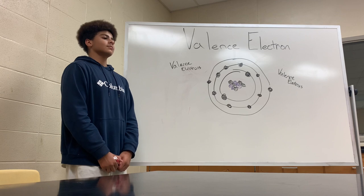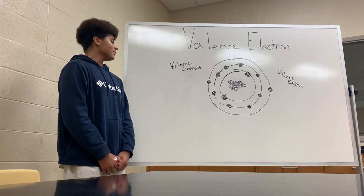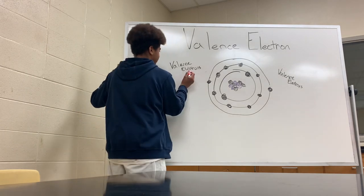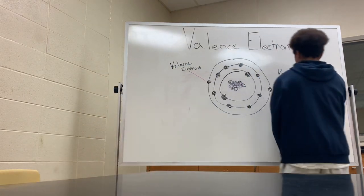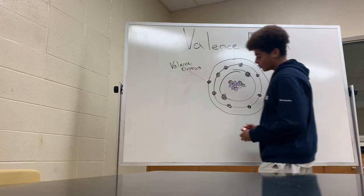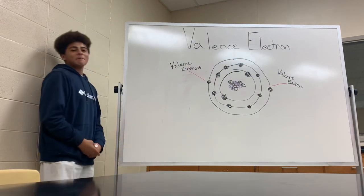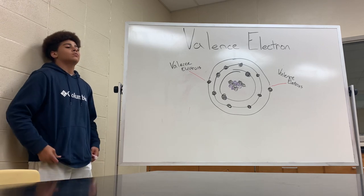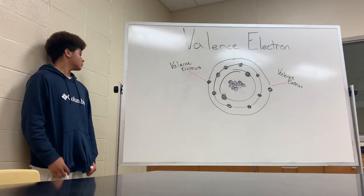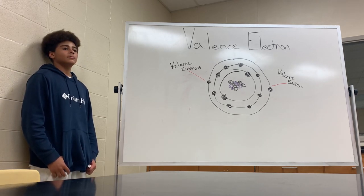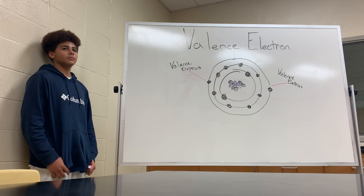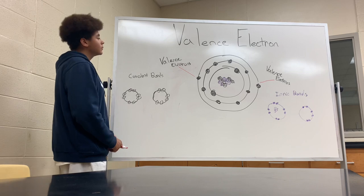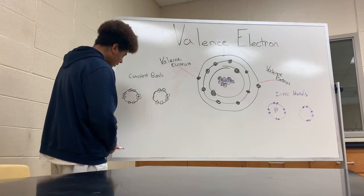Valence electrons. Valence electrons are in the outer shell and can be shared or transferred between atoms. Atoms with four or more valence electrons want to gain valence electrons to create a full shell. Atoms with four or less valence electrons want to get rid of them so that they can have a full shell as well. Covalent bonds without a full valence electron shell are able to share electrons between one another.